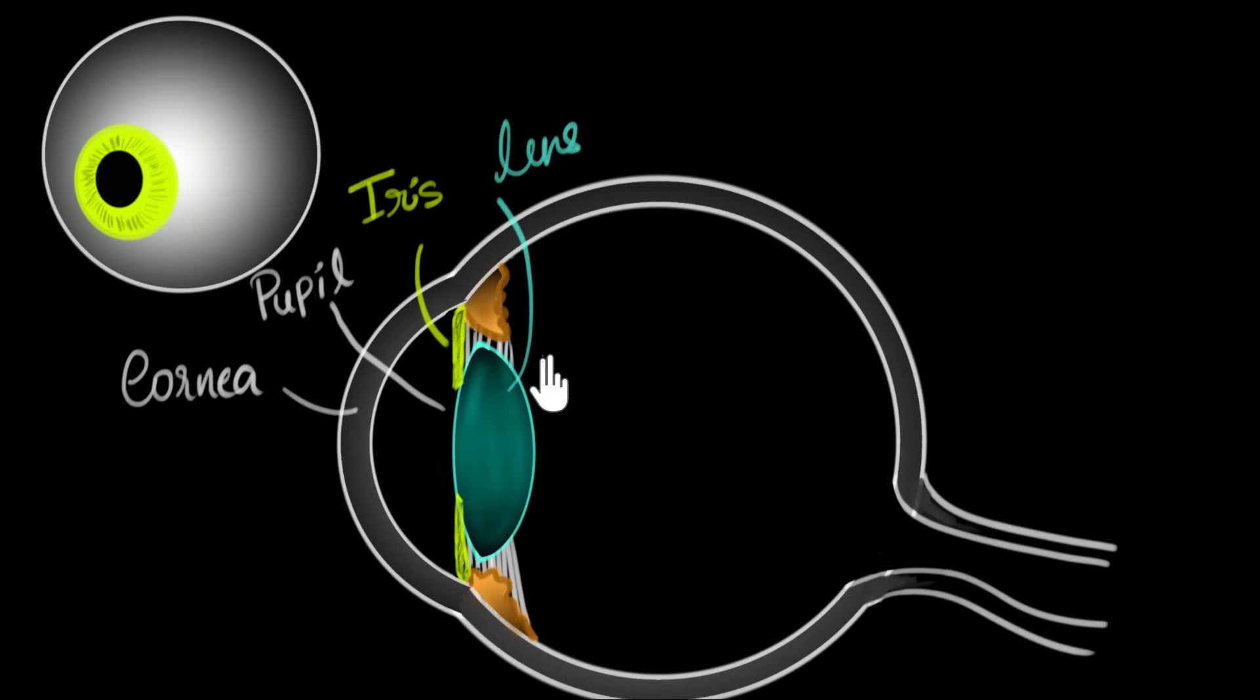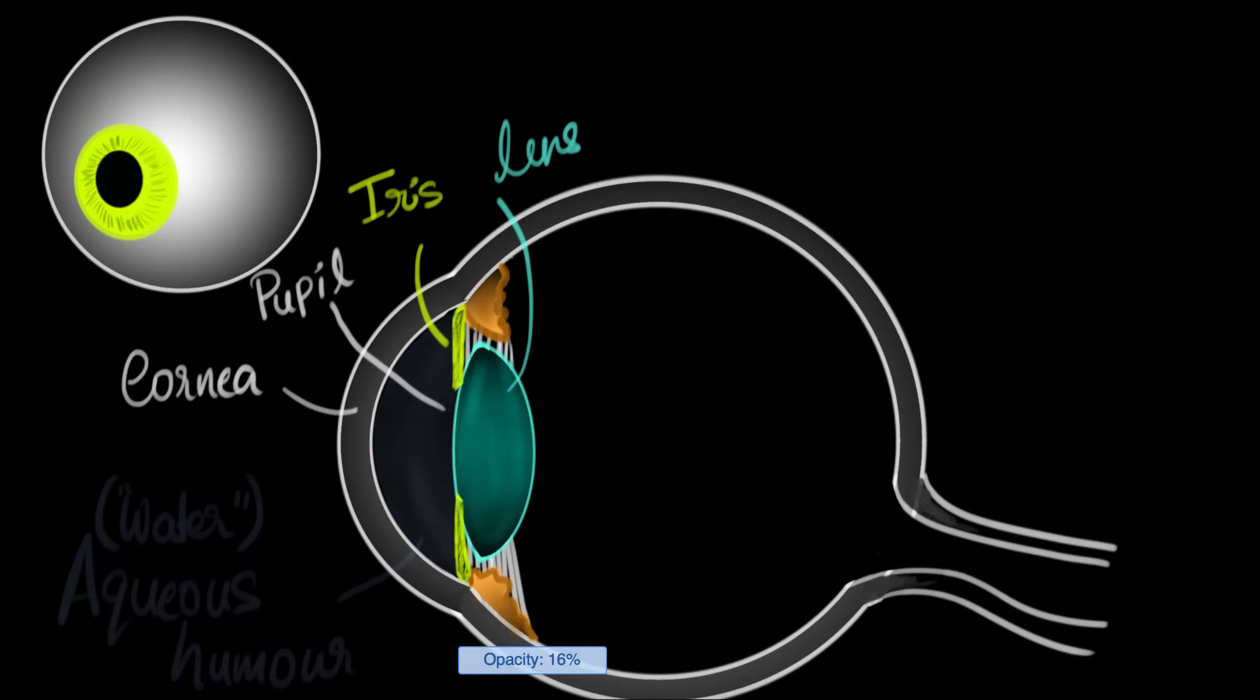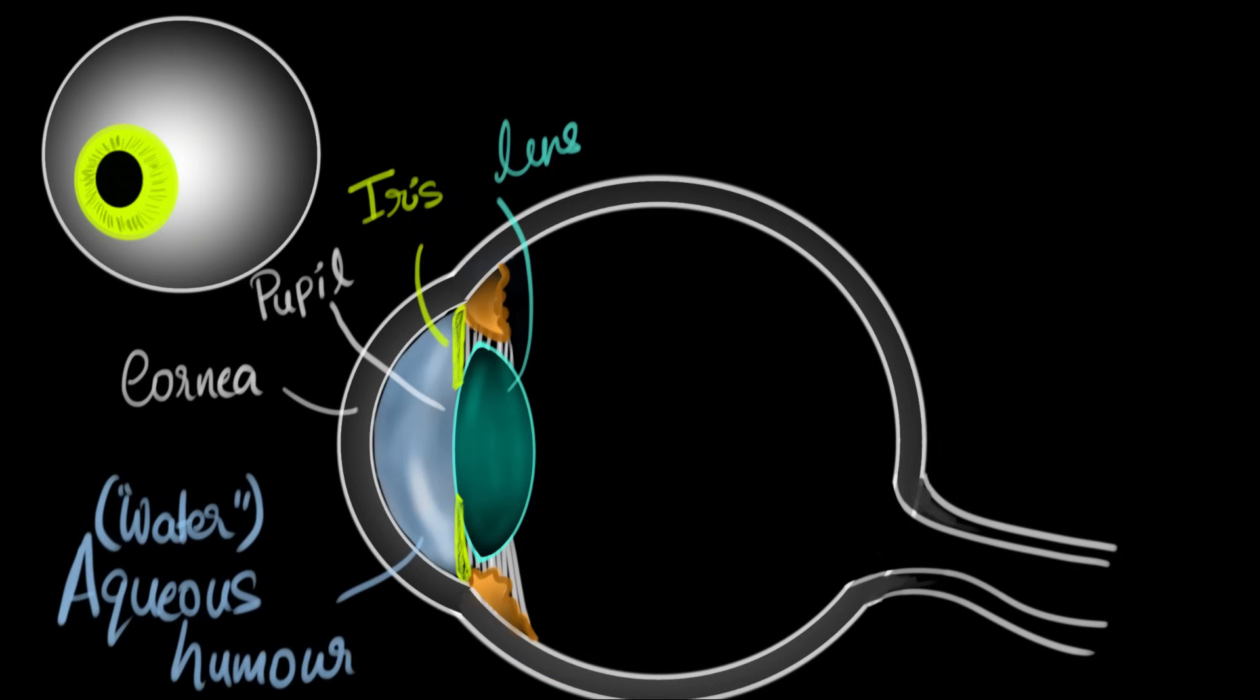This is called as the lens. And the space between the cornea and the lens is filled with a watery kind of a liquid, watery kind of liquid. And it's called the aqueous humor. It's called aqueous because it's watery.